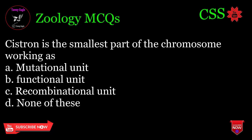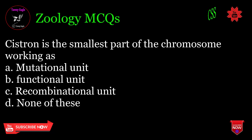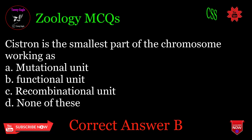Cistron is the smallest part of the chromosome working as: A. Mutational unit, B. Functional unit, C. Recombinational unit, D. None of these. Correct answer: B.